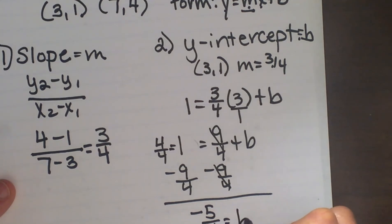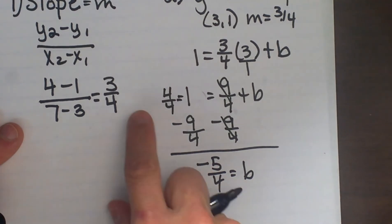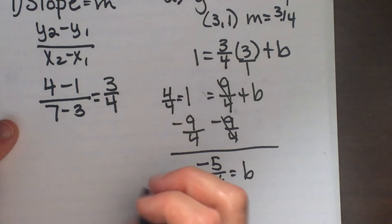So once I simplify that, I can now use my b and my slope, which is 3/4, and write my equation.